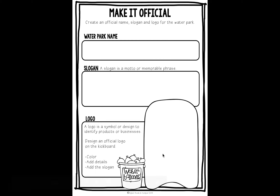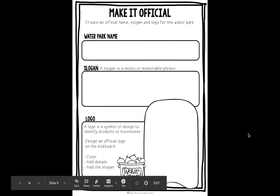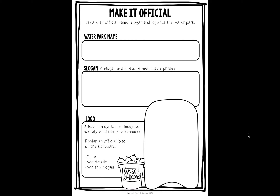Down here, you are going to create a logo. A logo is a symbol or design to identify products or businesses — just a little logo that can show people this is the symbol for your water park. Add color, add details, and then add your slogan. And this is all you are going to do for today with your project. Do not forget to also do your eye ready.